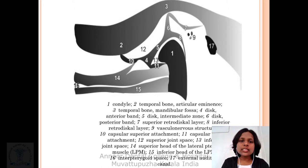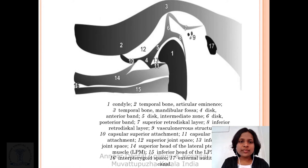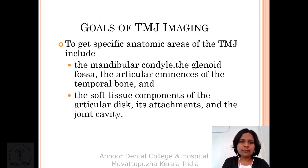This is the radiographic anatomy. You can see the mandibular condyle. There is temporal bone with articular eminence and mandibular fossa, and you can see the disc with retrodiscal tissues.